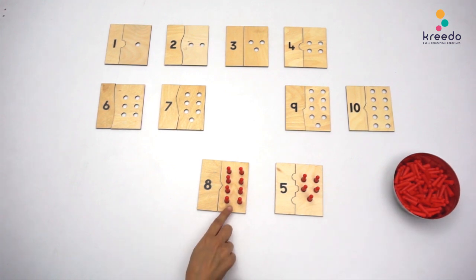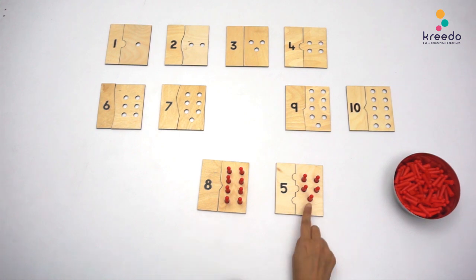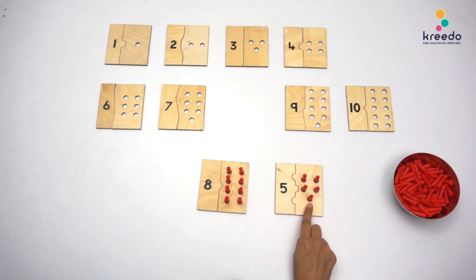Point to the bigger number and tell the child the number with more Skittles is the bigger number. Point to the smaller number and tell the child the number with less Skittles is the smaller number.